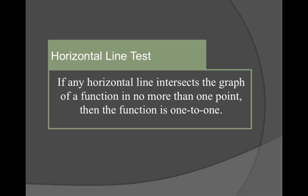So again, what is this horizontal line test? By definition, if any horizontal line intersects or touches a graph of a function in no more than one point, then the function is 1 to 1. Typically, we say it to ourselves in the converse, which is saying if a horizontal line touches the graph more than once, then the function is not 1 to 1. Same thing.